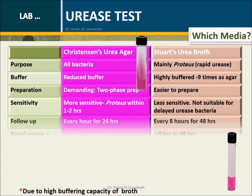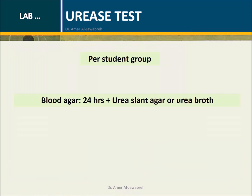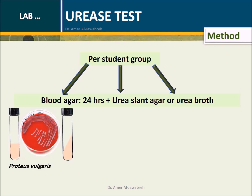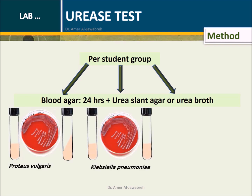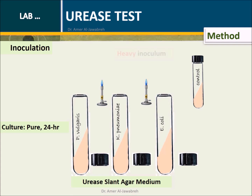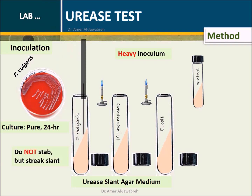Comparison between Christensen's and Stewart's media. Method: provide each student group with three culture plates — Proteus vulgaris, Klebsiella pneumoniae, and Escherichia coli — along with a urea slant or broth. With a wire loop, pick a heavy inoculum from the pure culture plate. Streak, but do not stab, on the surface of the long slant for the three bacteria.